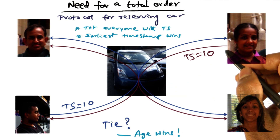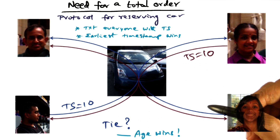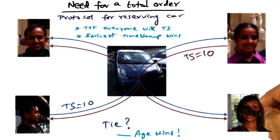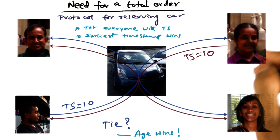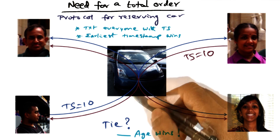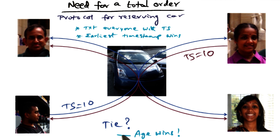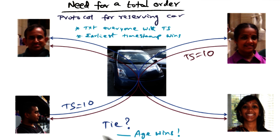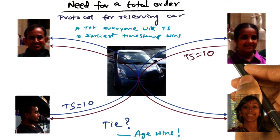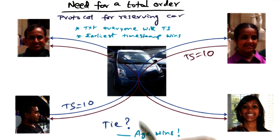Now we have a problem. All of us are looking at these text messages and trying to make a decision on who has dibs on using the car. How will my son and my wife know, given that both timestamps are the same, which one is the winner? What we do is break the tie: I stipulate that age wins. Therefore, if the timestamp happens to be exactly the same, then my wife, by seniority, is the winner — she gets the car.